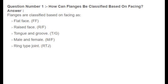Question number 1: How can flanges be classified based on facing? Answer: Flanges are classified based on facing as flat face (FF), raised face (RF), tongue and groove (T&G), male and female (MF), and ring type joint (RTJ).